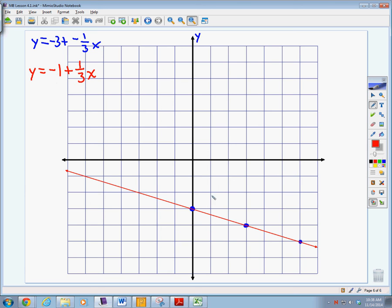Okay, our y-intercept is the negative 1 right here on our y-axis. We have a positive 1 third for our slope, so I rise 1 and run 3. Rise over run. This line should be blue here, just so we can see the difference.